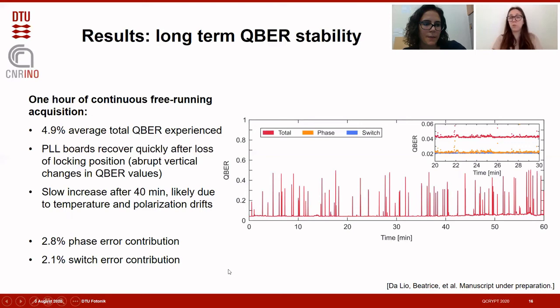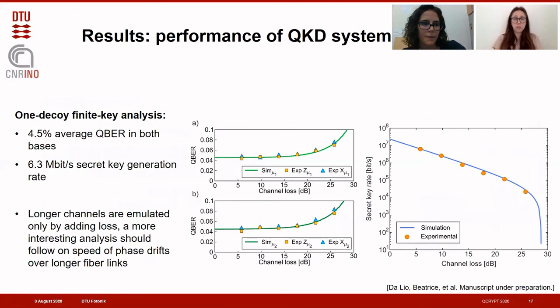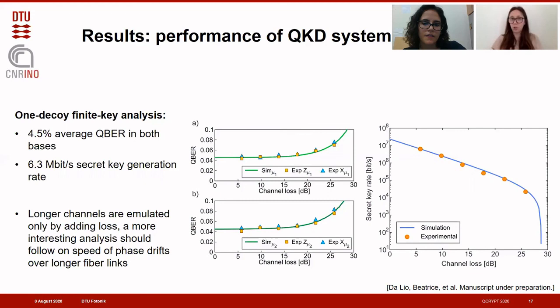Using this system to extrapolate a secret key rate, we measure the quantum error rate in all possible configurations for both bases and extrapolate a secret key rate of around 6.3 megabits per second. This means our system is now in the same range as more conventional systems using, for example, time-bin encoding with single-mode fibers.